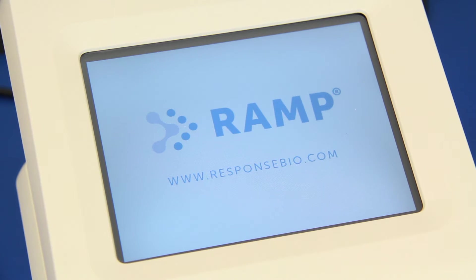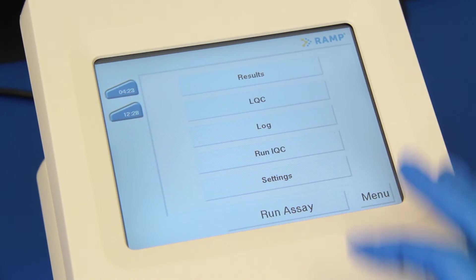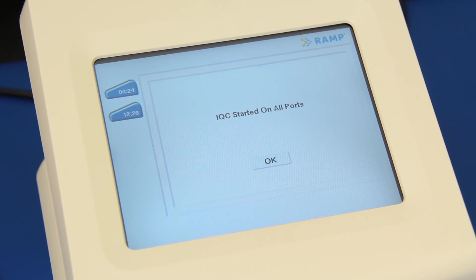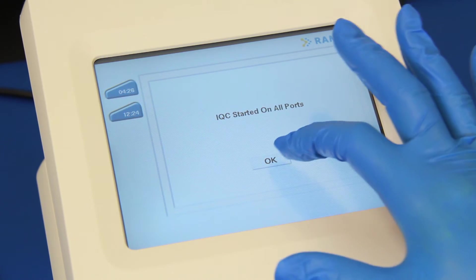An internal quality control check, or IQC, is automatically performed upon reader startup. It takes less than a minute to complete and can be programmed to run at set intervals or run manually at any time.